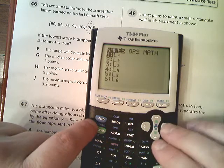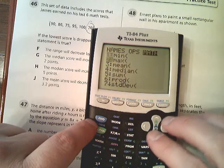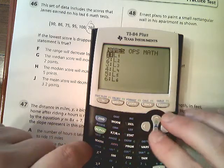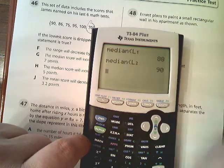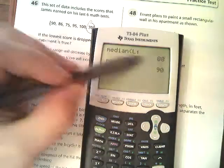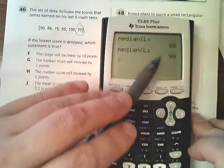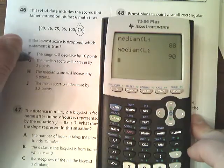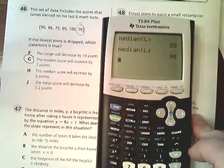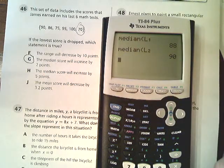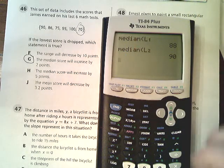I'm going to look at that stat set again. Go over to math, go down to median, type in L2, because that was the name of the second list, and it is 90. Now this says the median actually increases by 90, by two points, 88, 89, 90. So G says that the median score will increase by two points, so that's the answer. Number 46 is G.